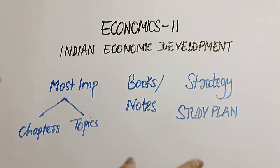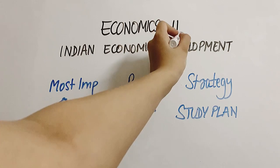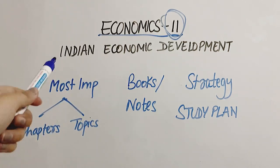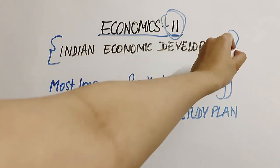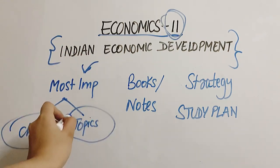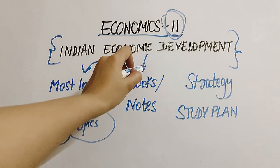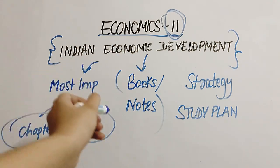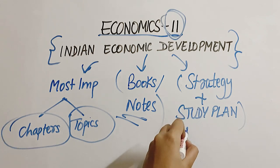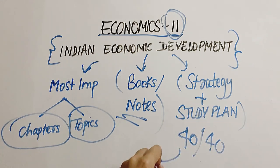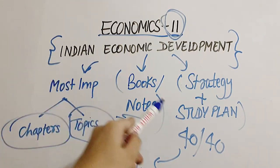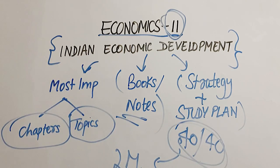Hi guys and welcome back to Humanities. I am here with Part 2 of the economics video. If you haven't seen Part 1, make sure to watch it first. This is Part 2 because we will talk about Indian economic development. We will be discussing the most important chapters, topics, what to study, what not to study, the books, extra reference books and notes, and then the strategy plus study plan to score 40 out of 40 in these remaining 2 months.